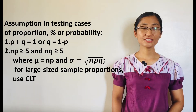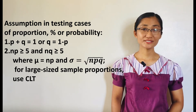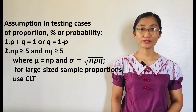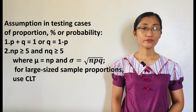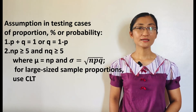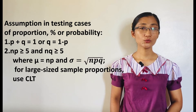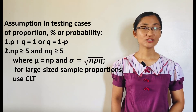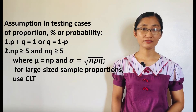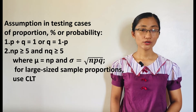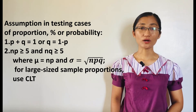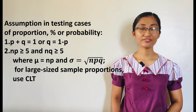The following assumptions are considered in testing cases that involve proportion, percentage, or probability. First, binomial experiment conditions are satisfied — there is a fixed number of independent trials with constant probabilities, and there are two outcomes in each trial, which we classify as success, p, and failure, q. Thus, p plus q equals 1, or q equals 1 minus p. Second, the conditions np greater than or equal to 5 and nq greater than or equal to 5 must both be satisfied for the binomial distribution of sample proportion to be approximated by a normal distribution with mu equals np and sigma equals the square root of npq.